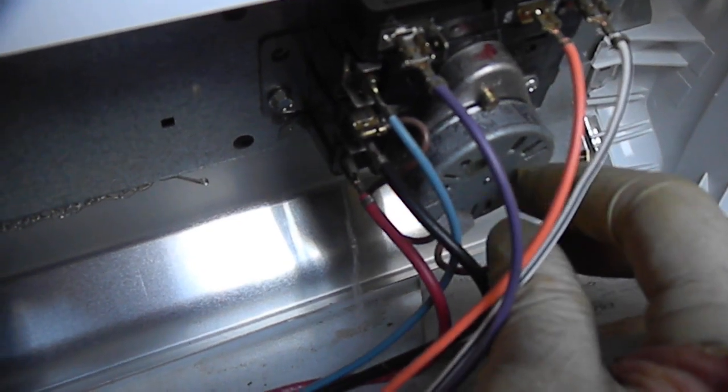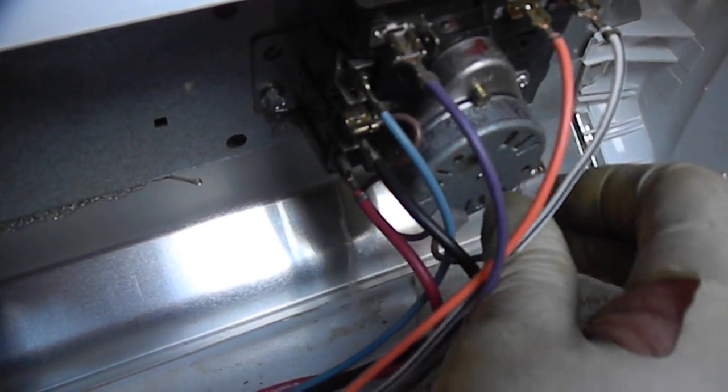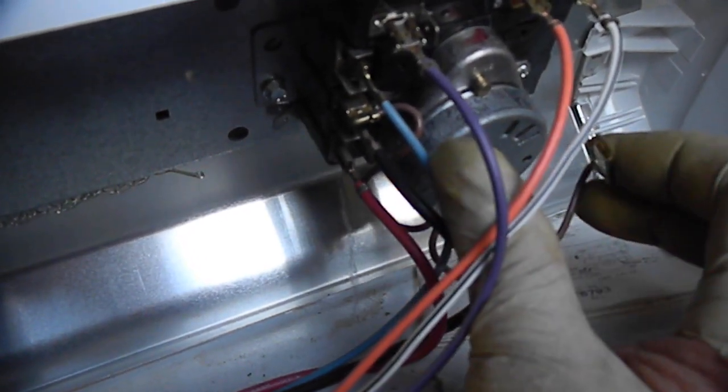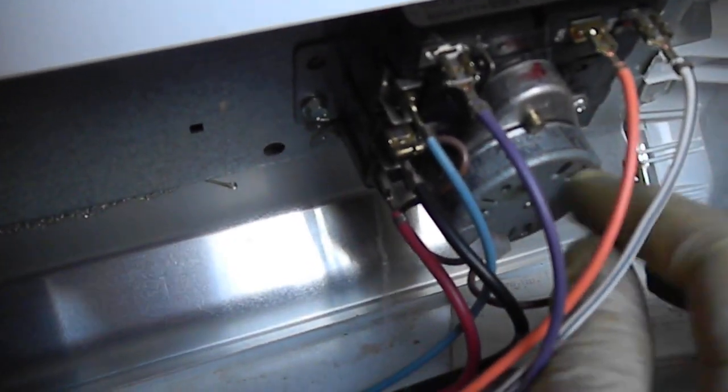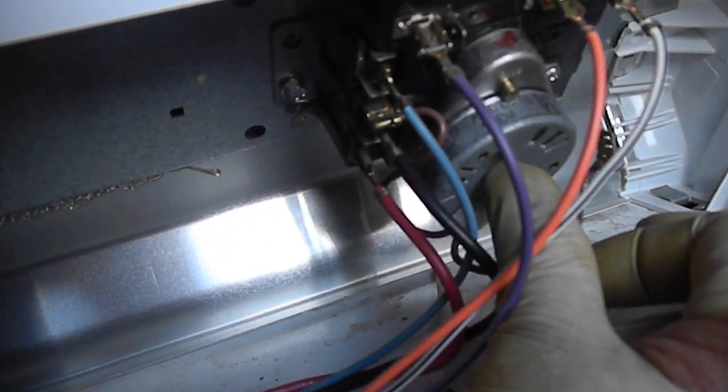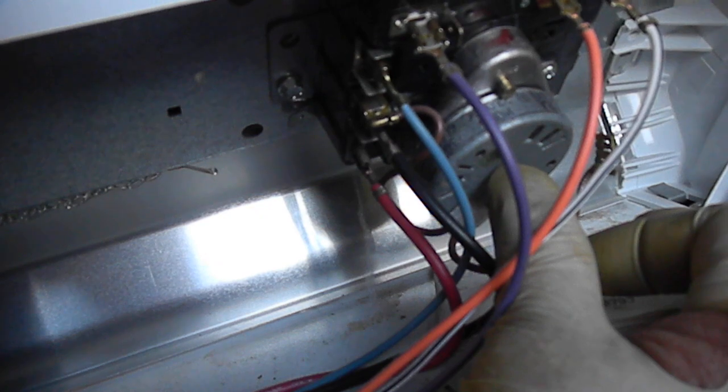If you do have voltage coming out at the timer leads, pull the timer leads or isolate the timer lead and check for continuity in the motor. If the motor is good, it's either going to be one or the two.